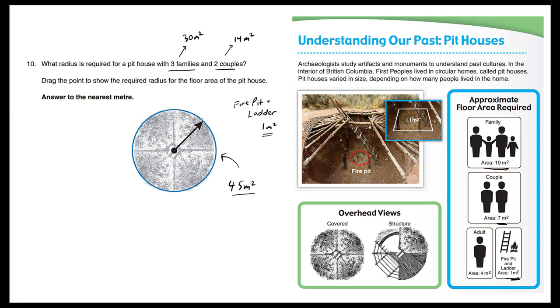Now what is the area of this home? What is the area of this circle? The area of the circle is pi r squared. And what do we require? We require 45 meters squared.